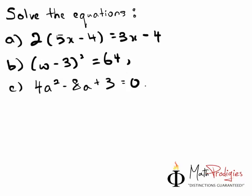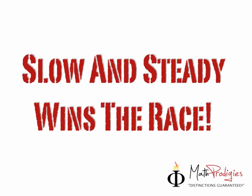For B, (w - 3) squared equals 64. Okay? And C, 4a squared minus 8a plus 3 equals 0. Remember, you don't have to panic. All you have to do is follow the code of the week. And the code of the week says that slow and steady wins the race. Do it slowly, be steady, and win this race called the examinations. Okay? With that, this is Coach Saifu signing off. You are a math prodigy. Good job.